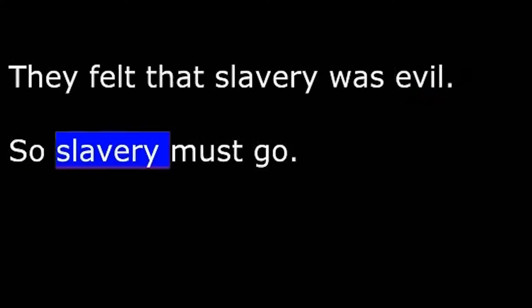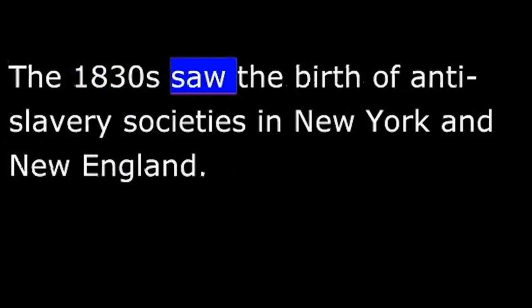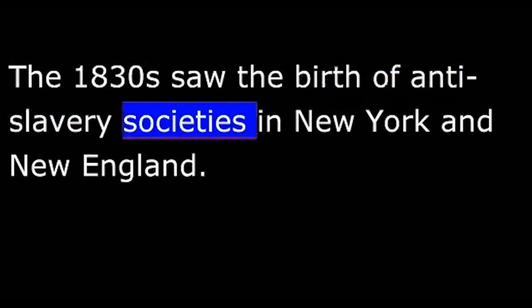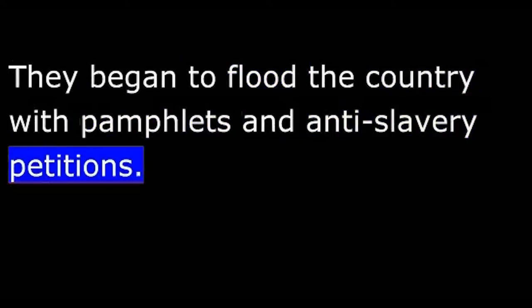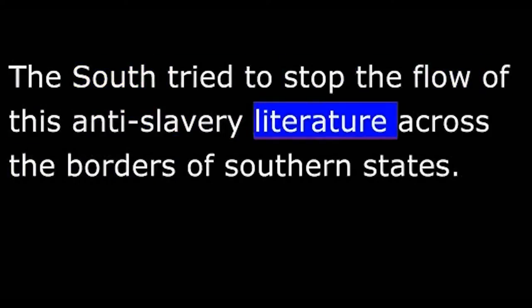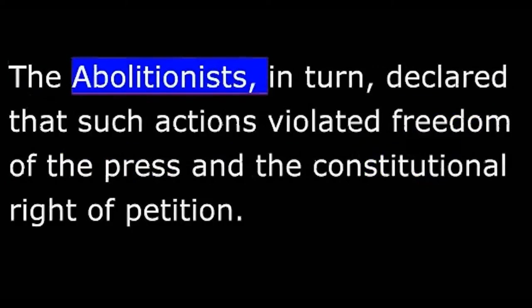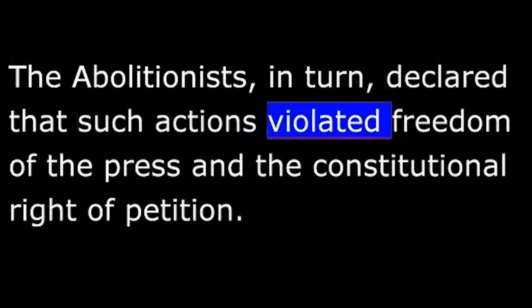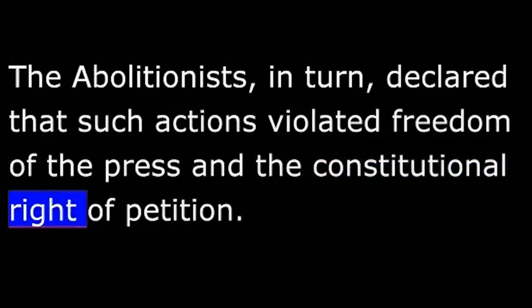In the beginning, the abolitionist movement was organized by religious groups. The members of these groups believed there could be no compromise with evil. They felt that slavery was evil, so slavery must go. The 1830s saw the birth of anti-slavery societies in New York and New England. The societies published newspapers and pamphlets. They began to flood the country with pamphlets and anti-slavery petitions. The South tried to stop the flow of this anti-slavery literature across the borders of southern states. The abolitionists, in turn, declared that such actions violated freedom of the press and the constitutional right of petition.